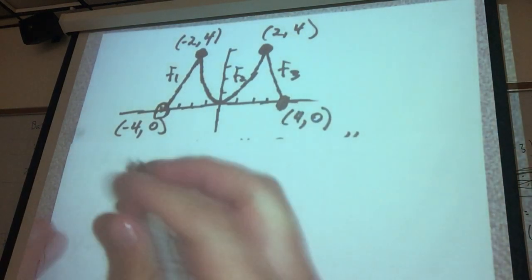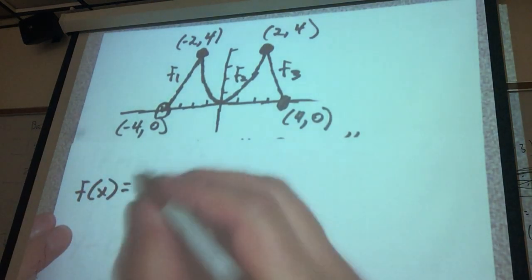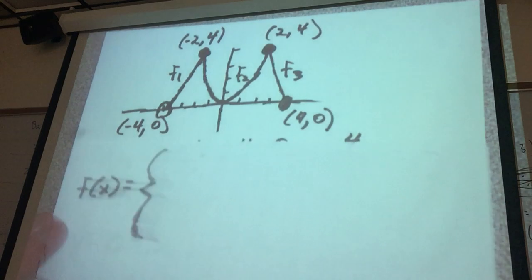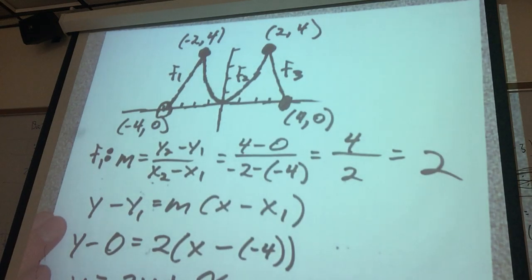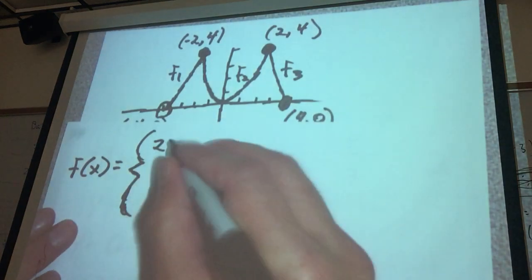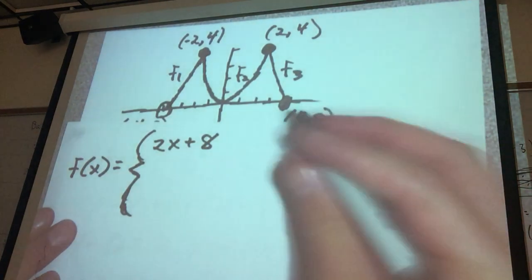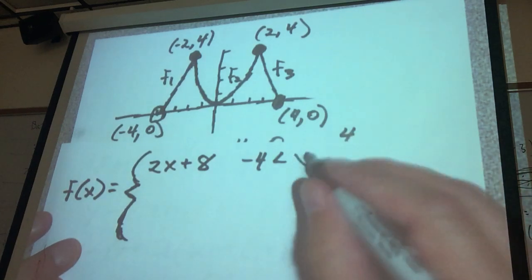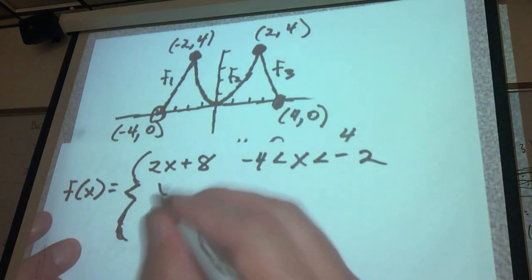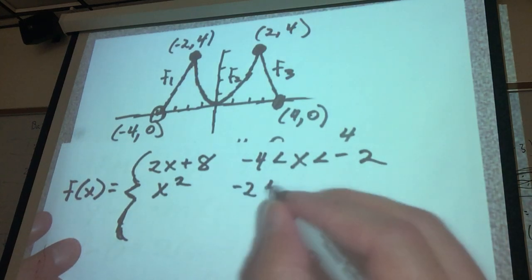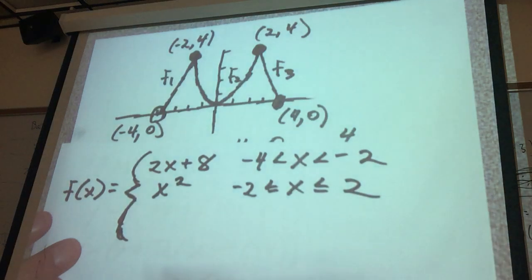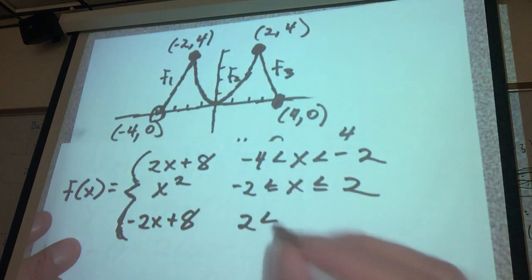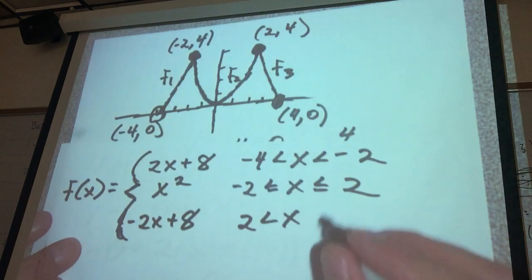f of x equals: 2x plus 8 if negative 4 is less than x, which is less than negative 2; x squared if negative 2 is less than or equal to x, which is less than or equal to positive 2; and negative 2x plus 8 if 2 is less than x, which is less than or equal to 4.